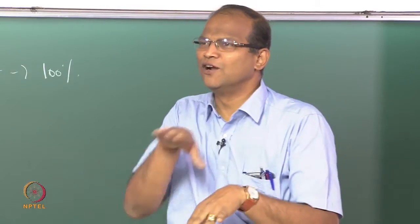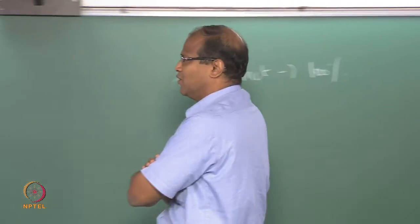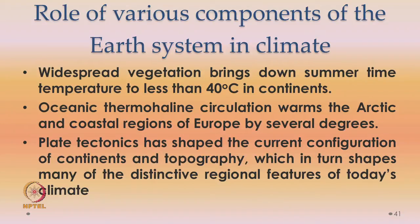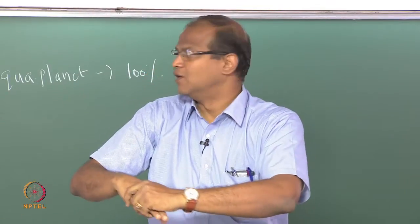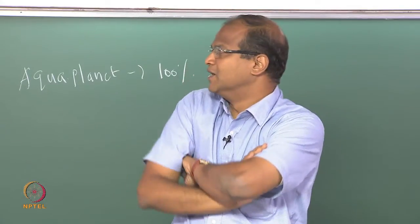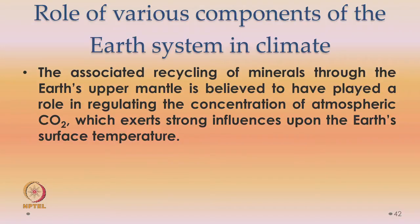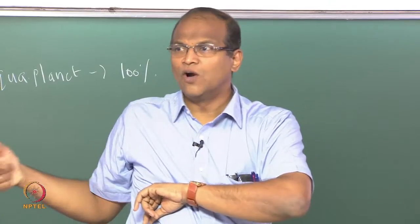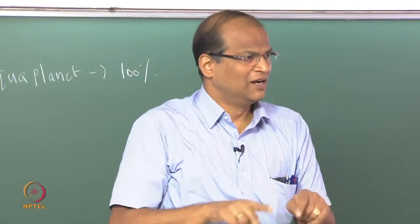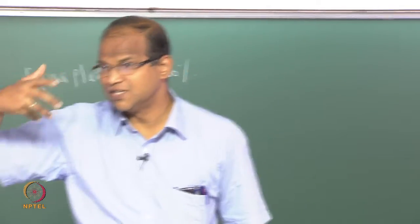Singapore is at 0 degrees — still the equator. In the southern hemisphere we do not have many economically advanced countries. Plate tectonics has shaped the current configuration of continents and their topography, which in turn shows many of the distinctive regional features of today's climate. Through the earth's crust and mantle — because of plate tectonics, plates coming together and moving apart, and mantle convection — there is a recycling of minerals through the earth's upper mantle, believed to have played a major role in the concentration of atmospheric carbon dioxide, which exerts strong influences upon the earth's surface temperature. Originally when earth was formed there was no oxygen — we will find out the source of oxygen in a subsequent class.